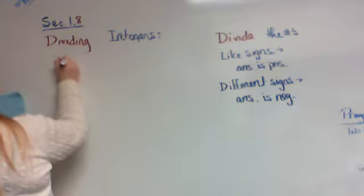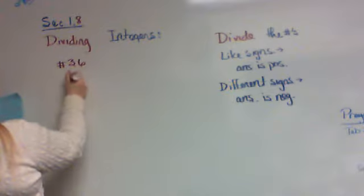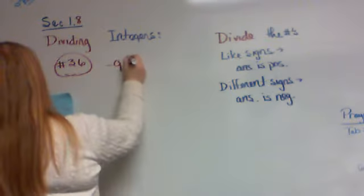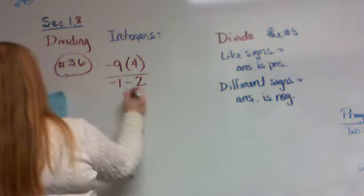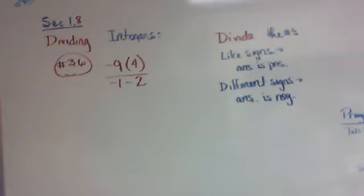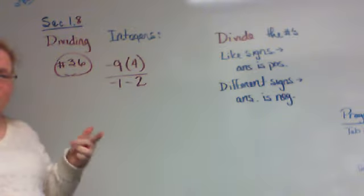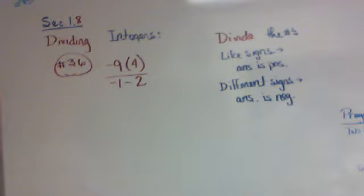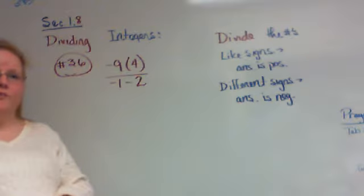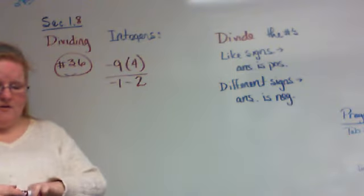Let's look at an example and see how you would do it. Number 36 on page 38. It says negative 9 times 4 divided by negative 1 minus 2. This is the whole crux of the situation. This problem right here not only has multiplication and division in it, it also has subtraction, which means by default it has to have addition in it. The question is, what are you going to do first? Go ahead, pause the tape. Let's see what you do. We'll talk about it in a second.